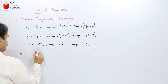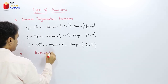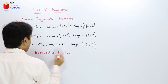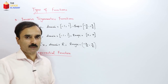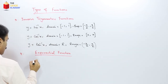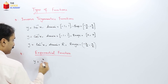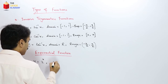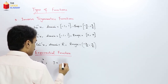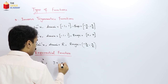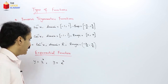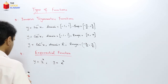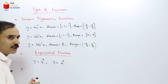The next type is exponential functions. An exponential function is one where the independent variable x appears in the exponent, for example y = 2^x or y = e^x. After exponential functions, we have logarithmic functions.